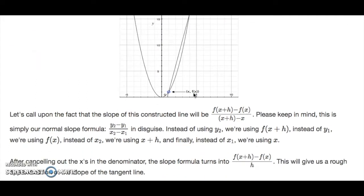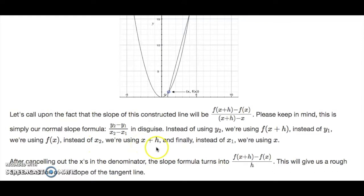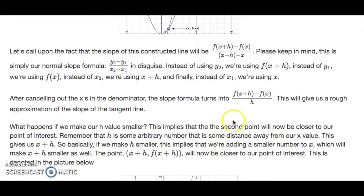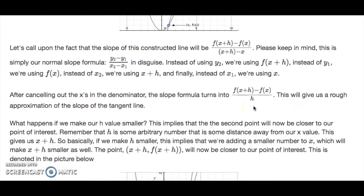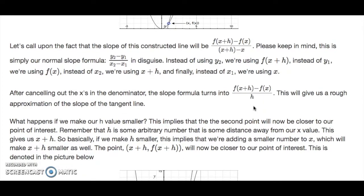The slope of this constructed line will be f(x+h) minus f(x) over x+h minus x. This is simply our normal slope formula y2 minus y1 over x2 minus x1 in disguise — using f(x+h) for y2, f(x) for y1, x+h for x2, and x for x1. After canceling the x's in the denominator, the slope formula turns into f(x+h) minus f(x) over h, which gives a rough approximation of the slope of the desired tangent line.